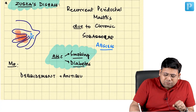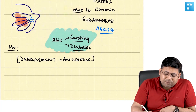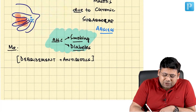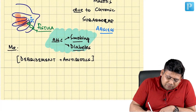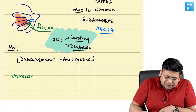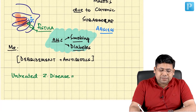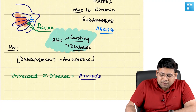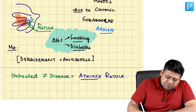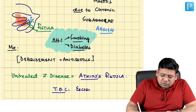One may ask: what happens if antibiotics are not taken? If you don't allow the pus to come out, it will make a tract and come out on the surface — this is known as a fistula. So untreated Zuzka's disease will convert itself into Atkins fistula. And remember, the treatment of choice for fistula is not debridement — it is the excision of the fistula.